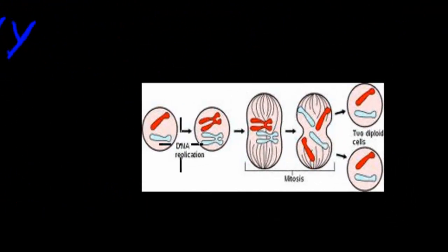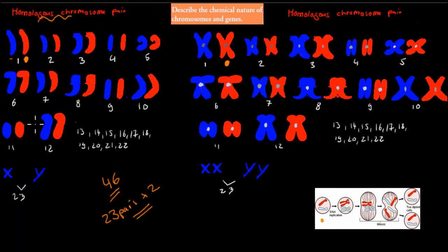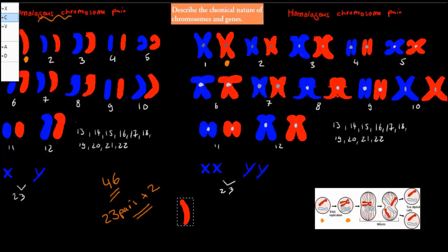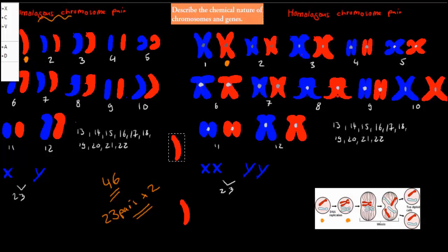Looking at meiosis, the first stage is where chromosomes are all by themselves in their single form. Then we duplicate them and represent them as that X form. So what happens is we have one chromosome, and during one of the stages of meiosis, we have to actually double it. We double it, and then attach them end by end — and that's where the X form comes from.